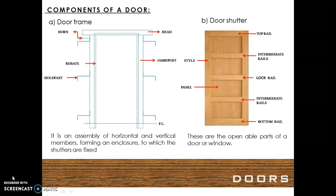The various components of a door are the door frame and the door shutter. The door frame is an assembly of horizontal and vertical members forming an enclosure to which the shutters are fixed. The shutters are openable parts of a door or a window.